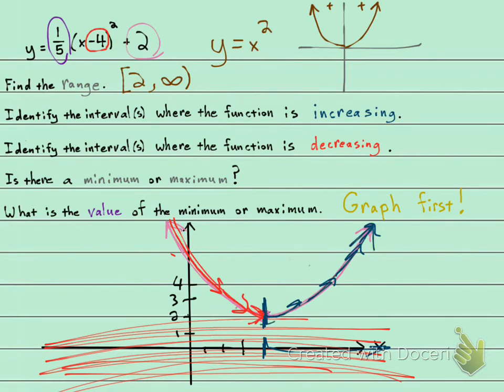And we increase from 4 to infinity. Now at this point of 4, are we increasing or decreasing? Kind of neither. So increasing is going to be from 4 to infinity. And I'm not going to include the 4. Decreasing is going to be from negative infinity to 4. And I'm not going to include the 4. So as I go from left to right, I can see on this graph I'm decreasing, decreasing, decreasing, decreasing. Boom. I stop here, where my x is 4. And then I am increasing, increasing, increasing.